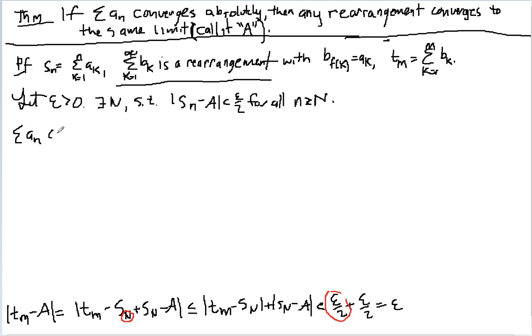This thing converges absolutely, so what that means is that this thing converges, so there exists an N2 such that, how do you want to write this? We're going to use the Cauchy criterion here, and that's going to be |a_{n+1}| + |a_n| is less than epsilon over 2 as well.